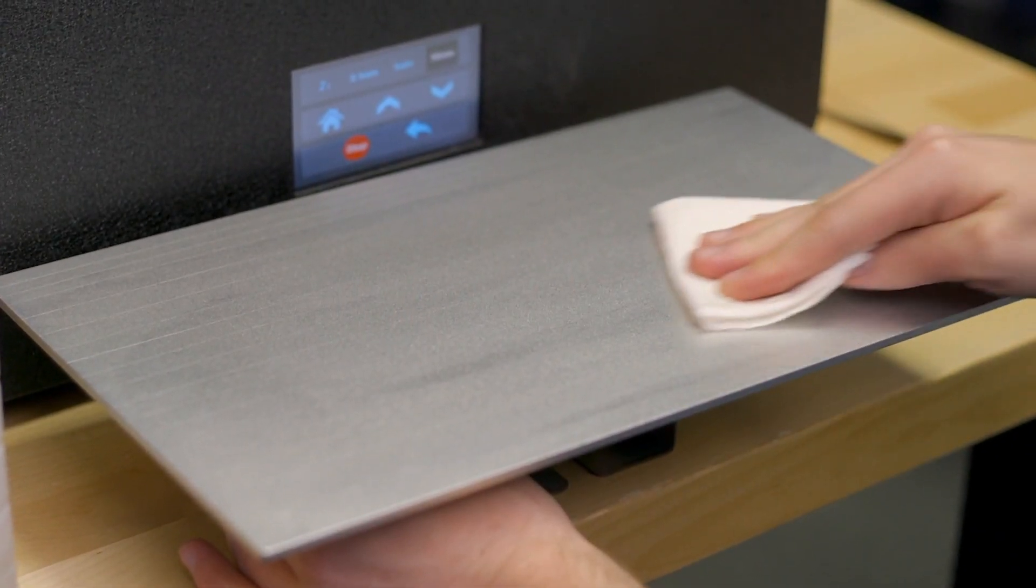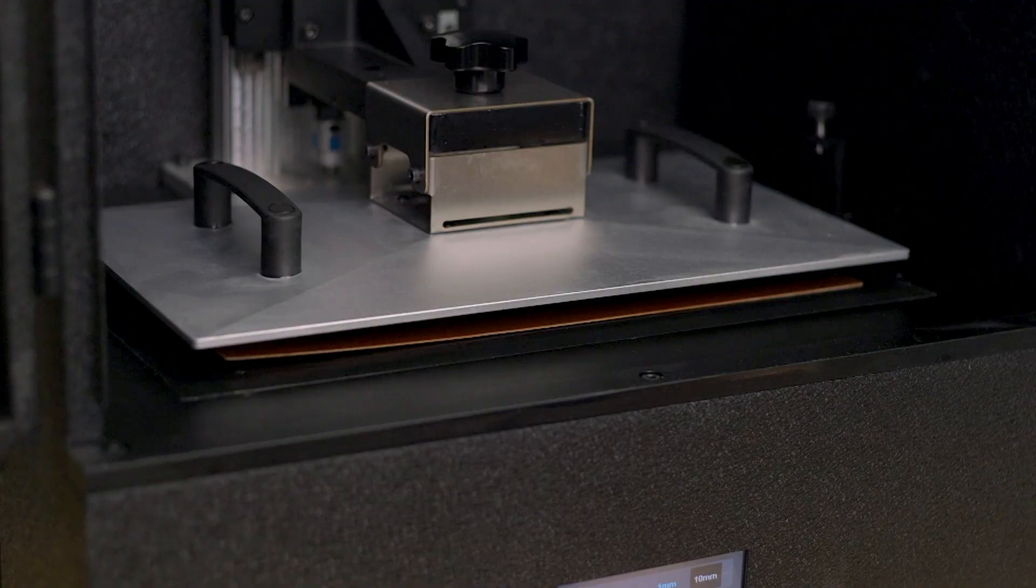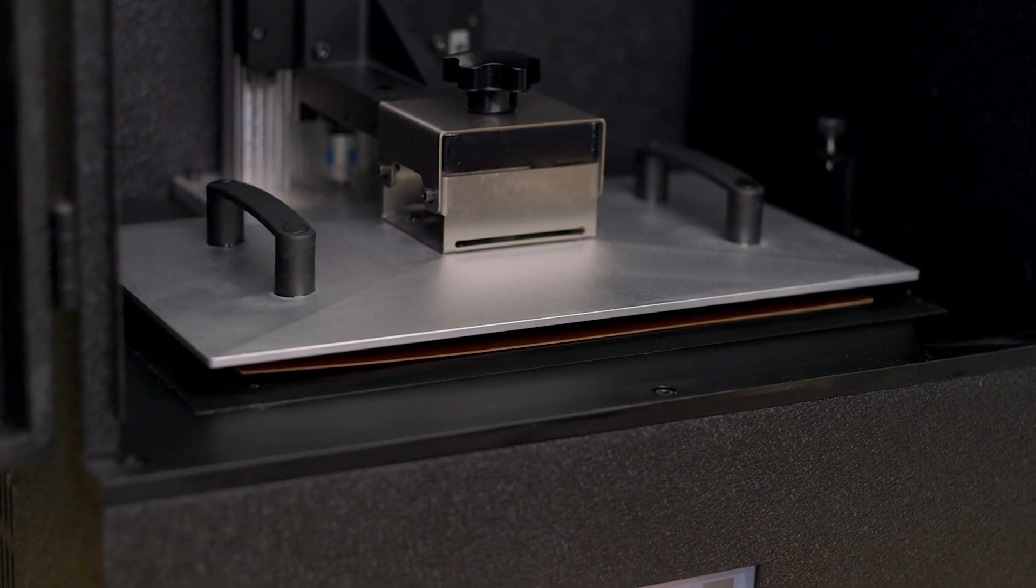Installation is as easy as cleaning off your build plate with some isopropyl alcohol, letting it dry, removing the liner, and sticking on the LayerLock SLA build surface. If you already have a Wham Bam FBS installed, make sure you follow the instructions and install a spacer if necessary to the 3D printer to account for the added thickness of the Wham Bam System and the 0.8mm thick LayerLock SLA sheet.